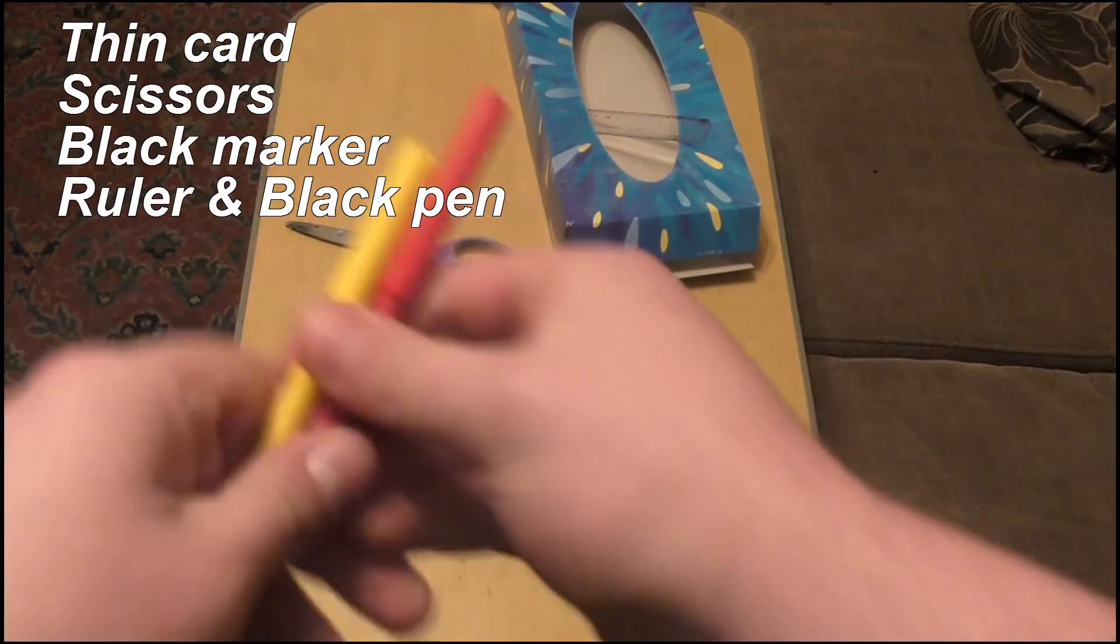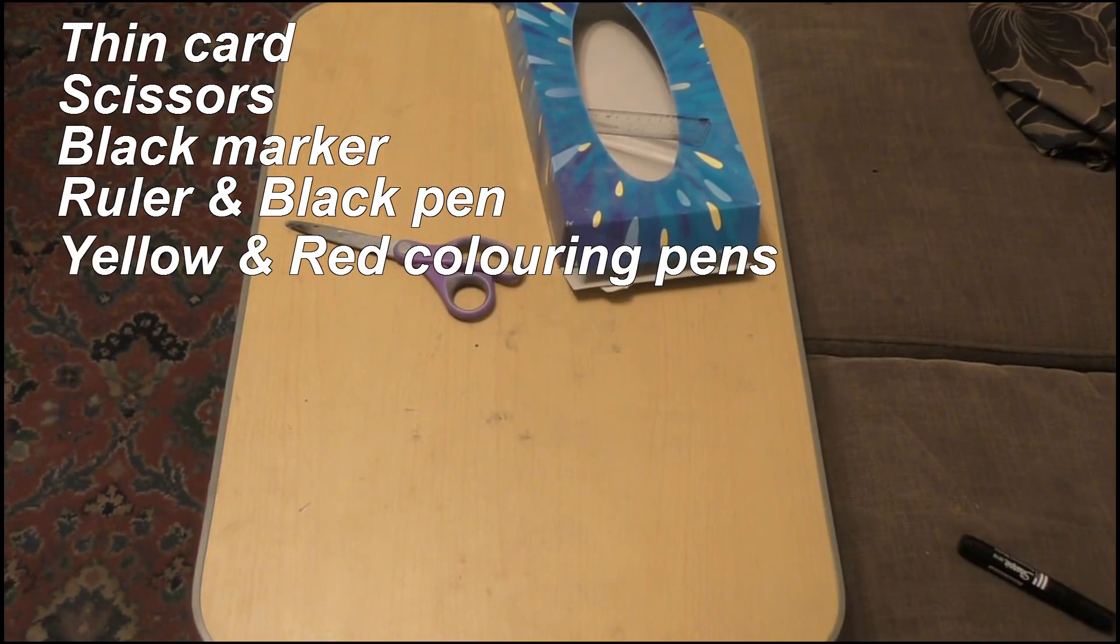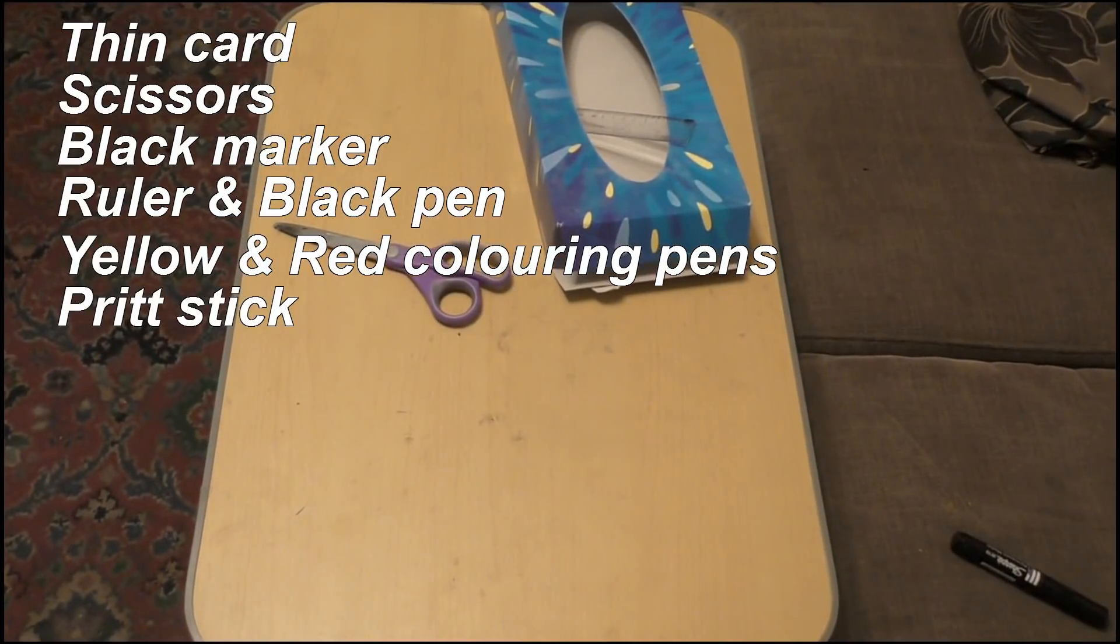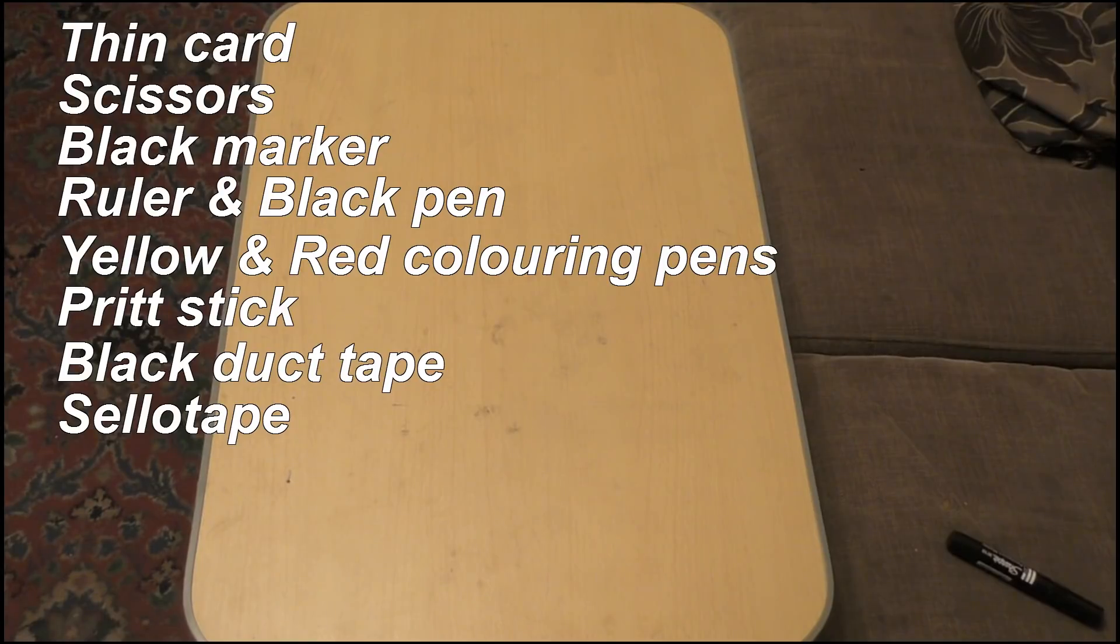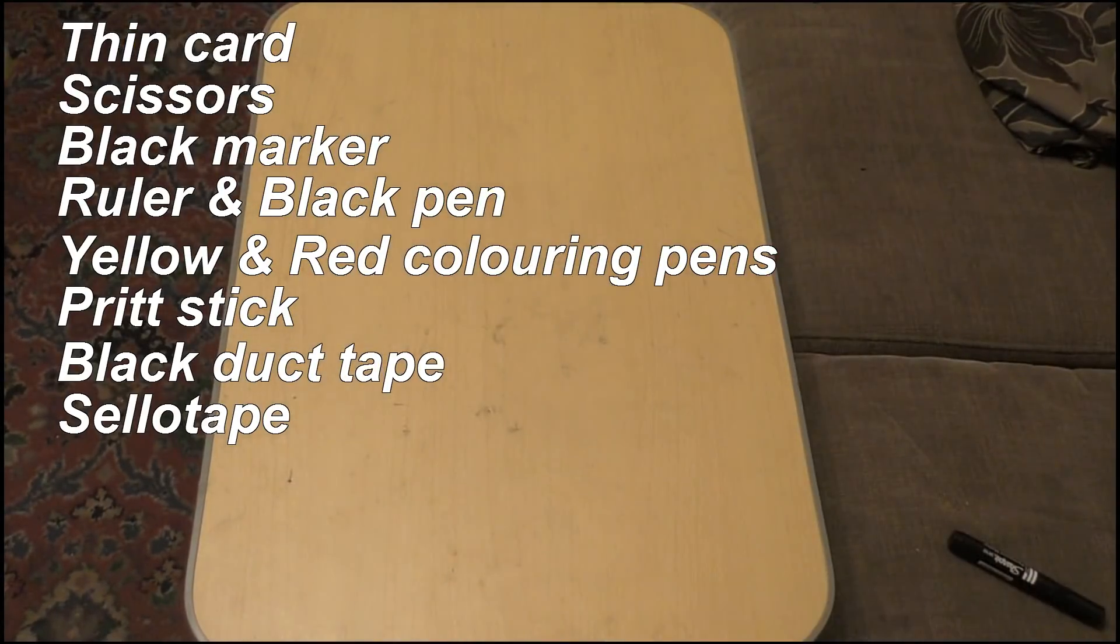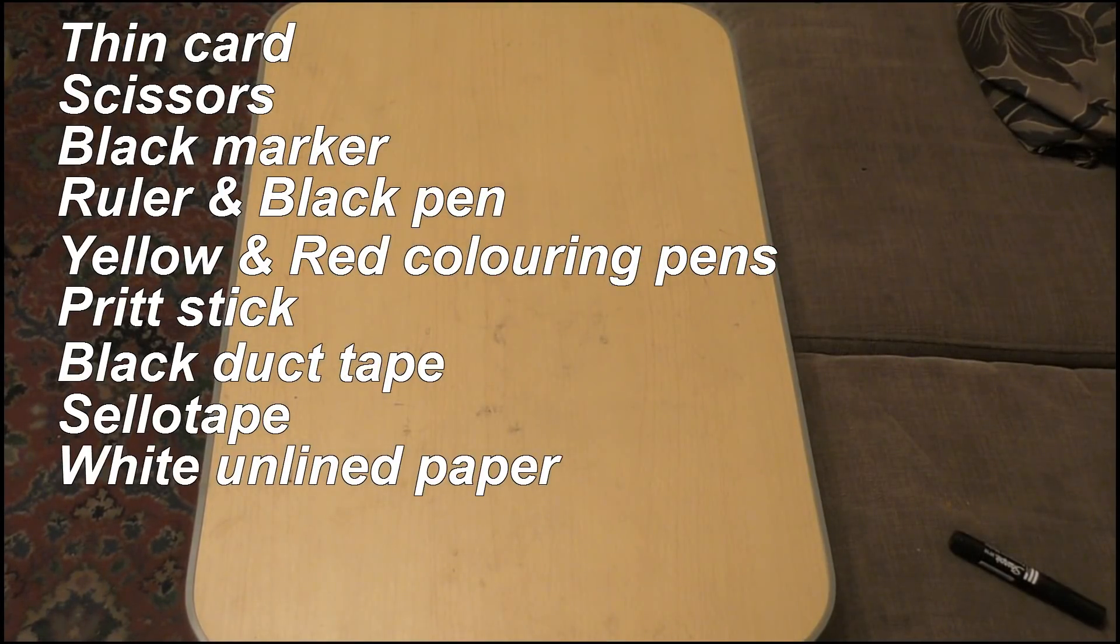Yellow and red coloring pens, Pritt stick, some black duct tape, some sellotape as well, and some white unlined paper. And finally, these instructions.